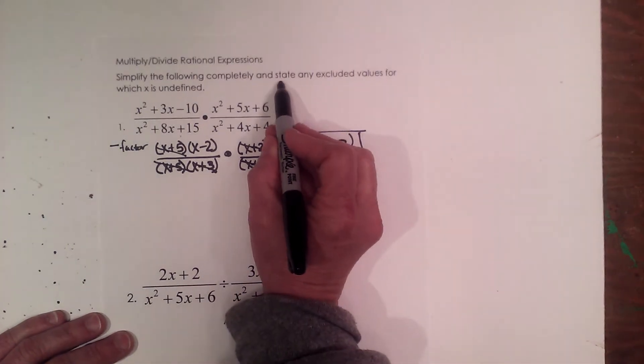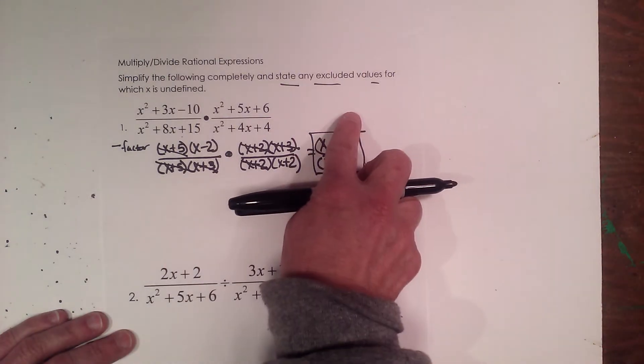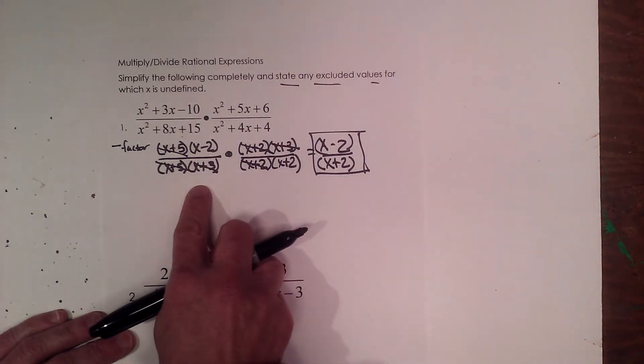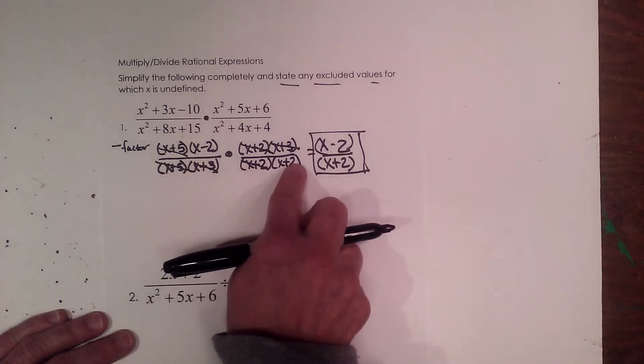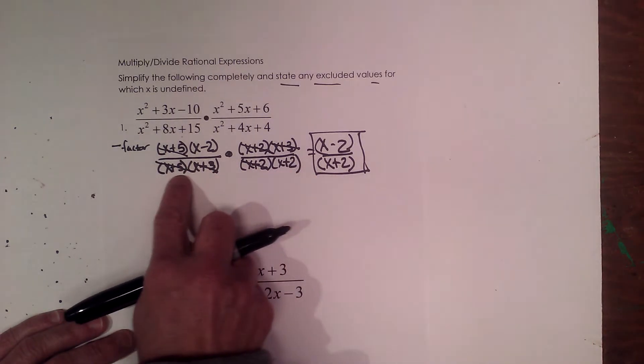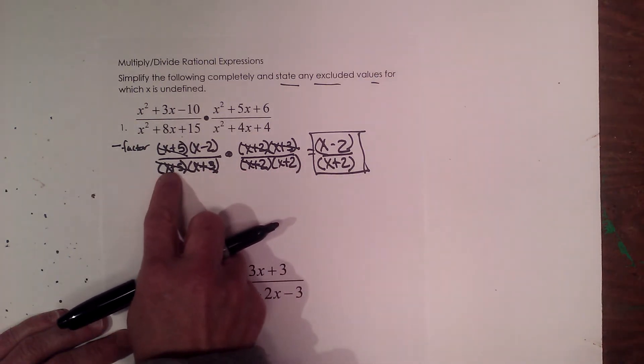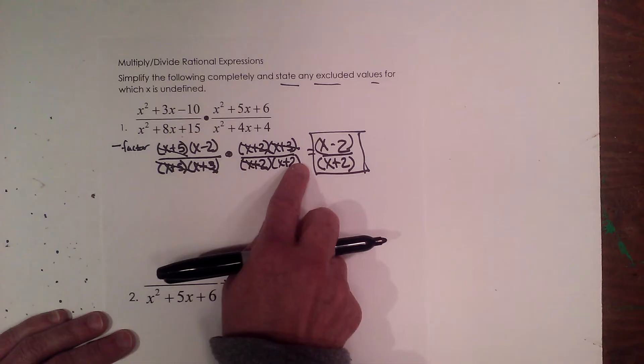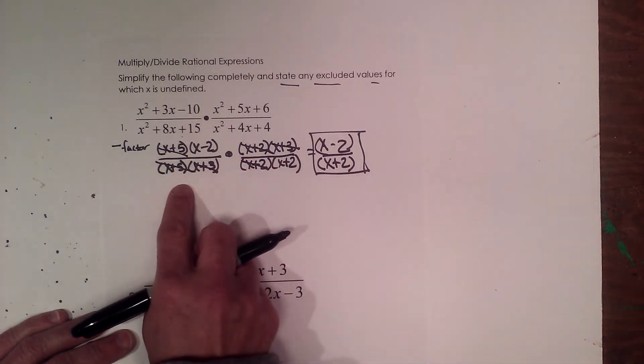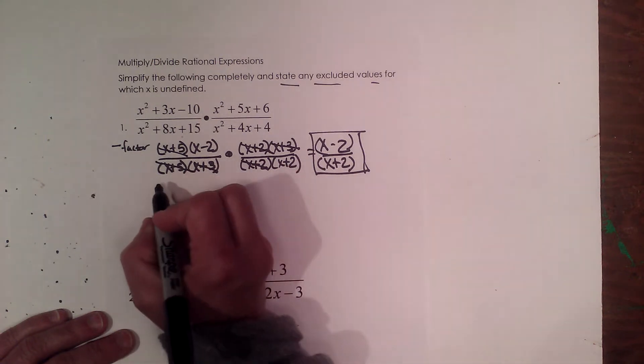Now the other part of this problem, we have to state any excluded values. So, what we want to do is go back to the original problem and look at our factors. Whatever the denominator is, we've got some holes or some what we call excluded values. Any time you have a 0 in the denominator, that fraction becomes undefined.